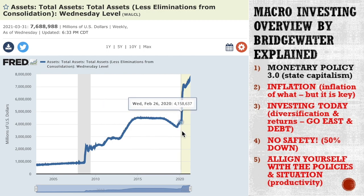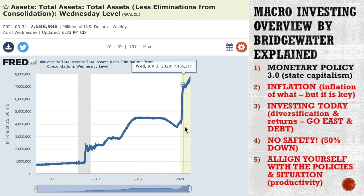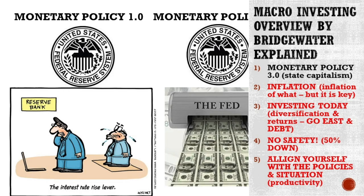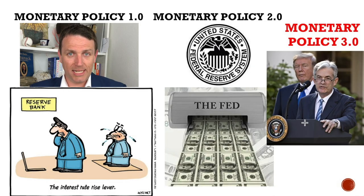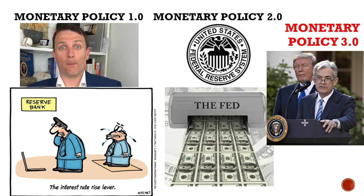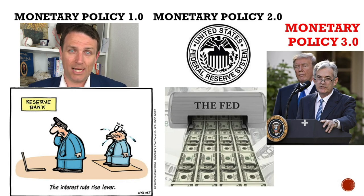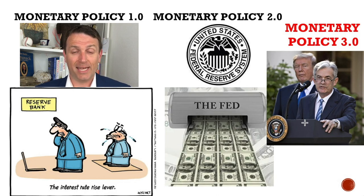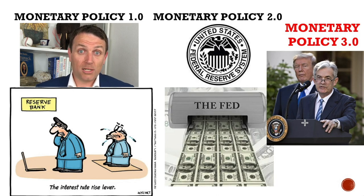This is monetary policy two — injections of liquidity to stimulate the economy without directly handing it to people, which is what's happening now with stimulus acts and infrastructure bills. Monetary policy three is about the coordination of fiscal policy — the government — and monetary policy — the Fed. The Fed prints money and buys treasuries for projects. We had stimulus acts in the US, same in Europe and other developed countries, and now infrastructure. The politicians make the decision where to put the Fed's printed money.